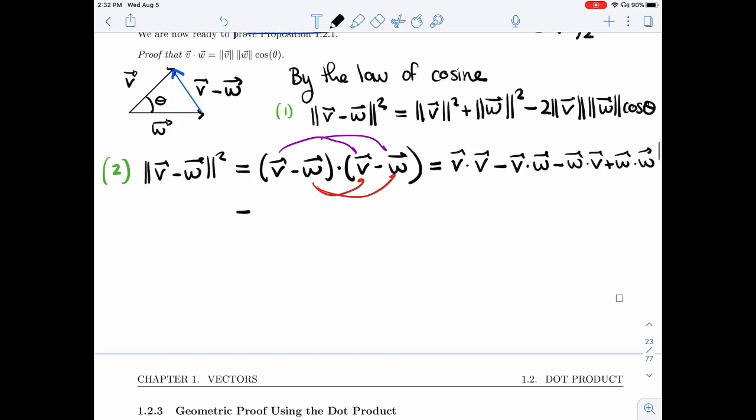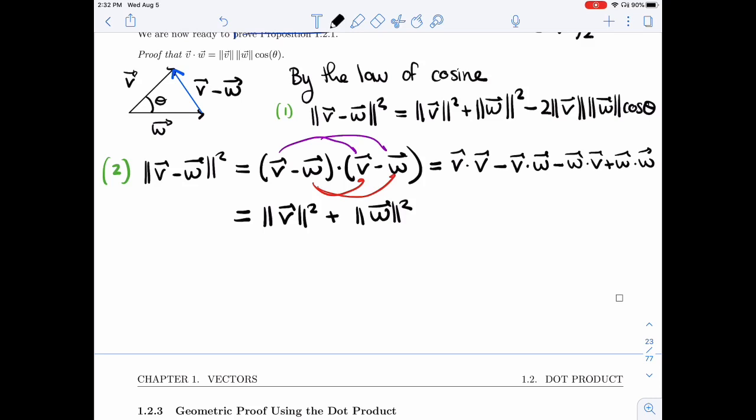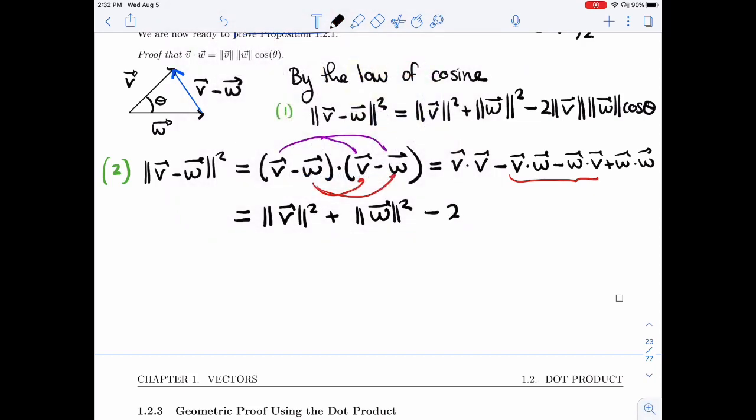So I end up with the length of V squared. The last term is the length of W squared. And then this middle two terms, they're the same. These two are the same, and so I get minus 2V dot W.